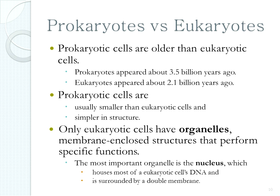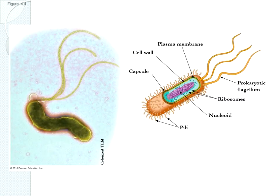Prokaryotic cells are older than eukaryotic cells. They're usually smaller and much simpler in structure, having basically those four core elements, and maybe some cilia or flagella on their surface. Eukaryotic cells have membrane-bound organelles — structures inside the cell that perform very specific functions, like the nucleus — and we're going to talk about those as we go through the structure of eukaryotic cells.